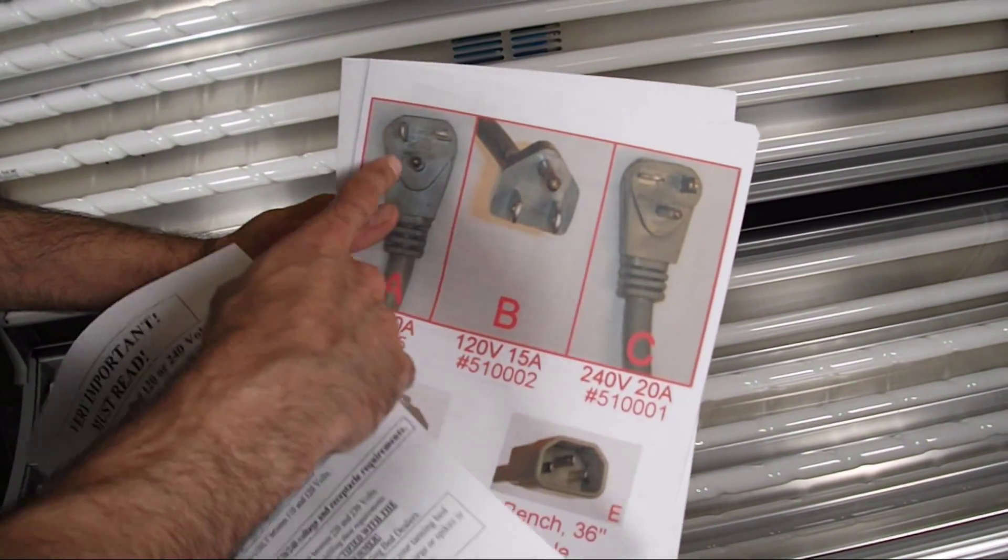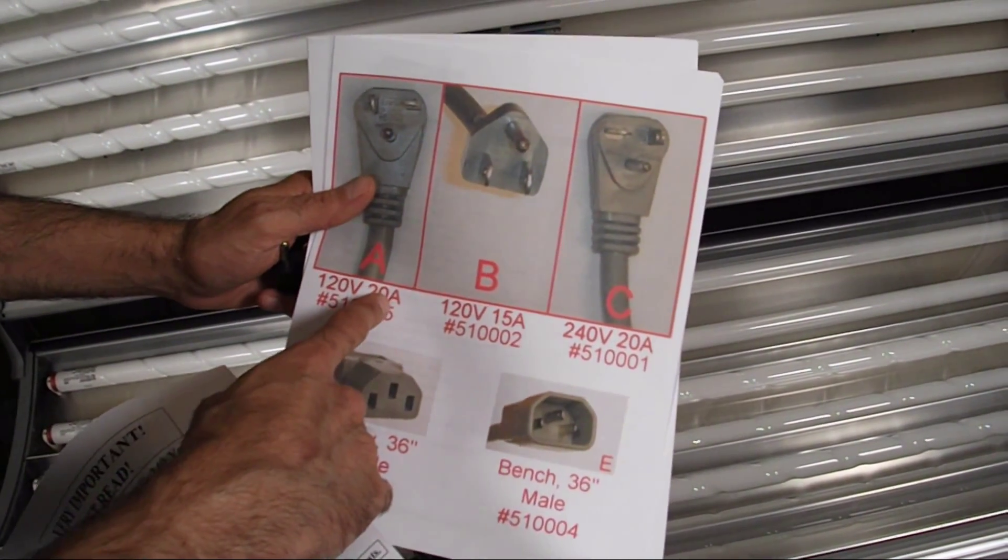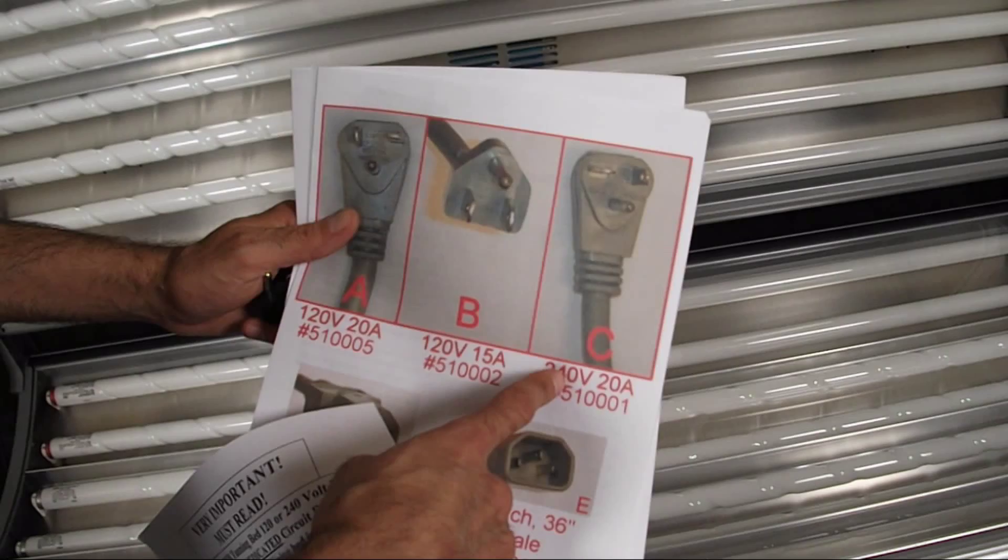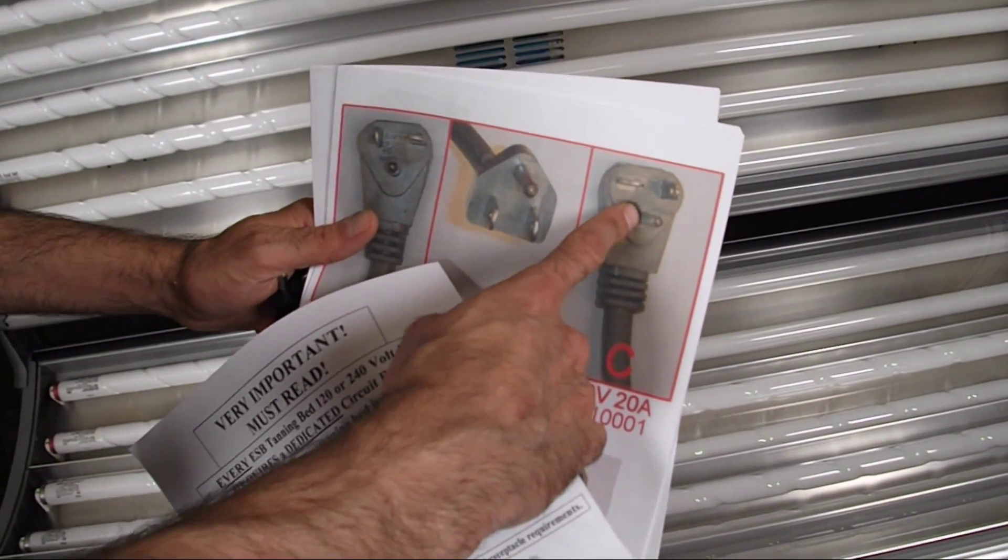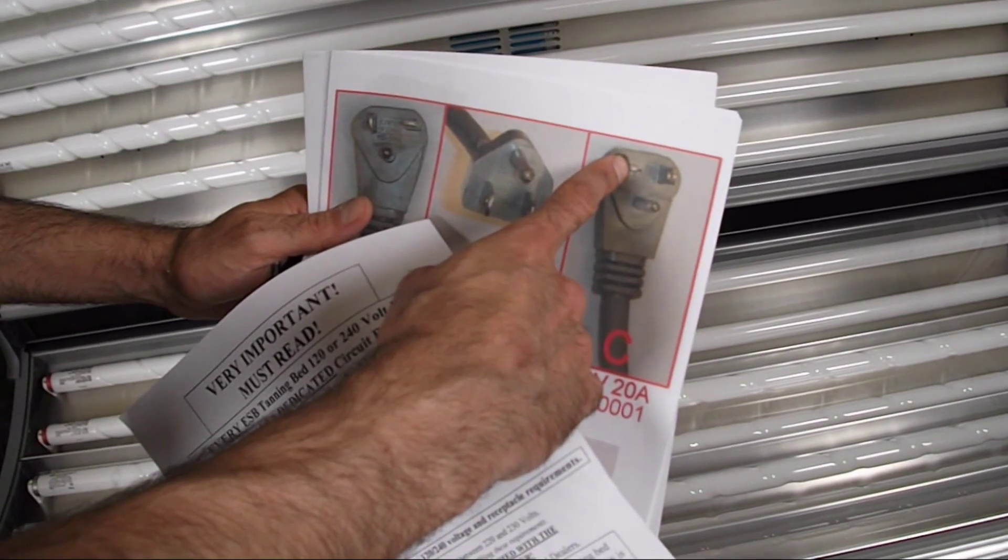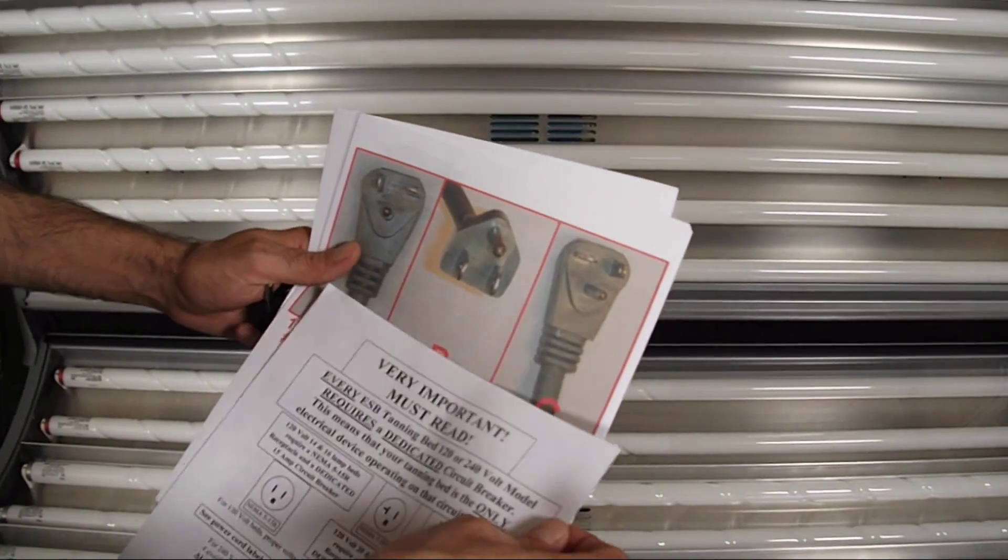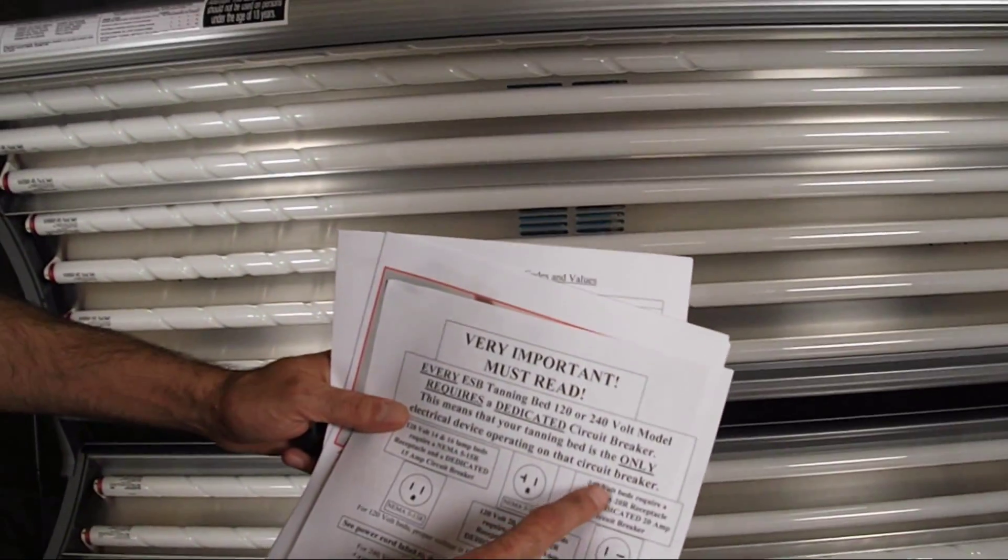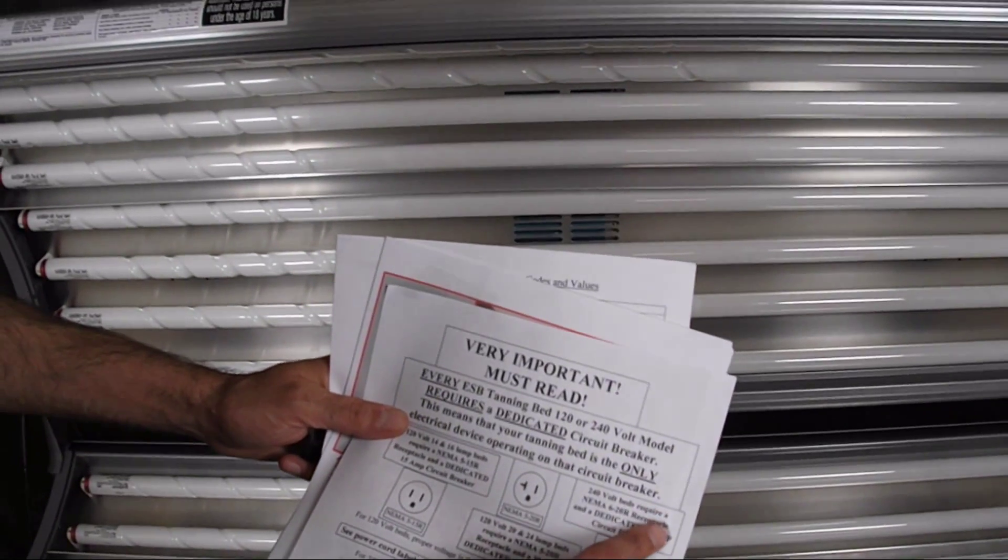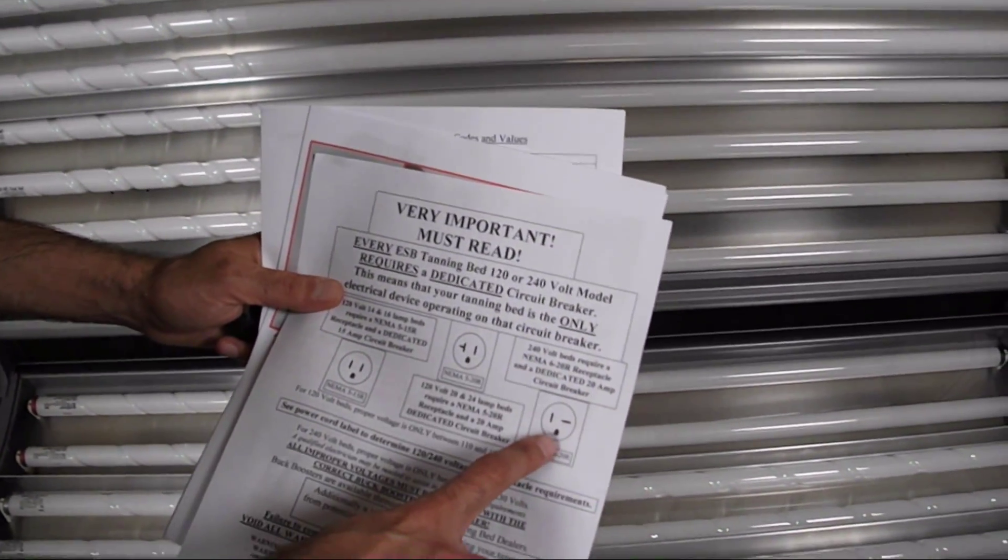This last plug here is actually a mirror image of the 120 volt, 20 amp. This is the 240 volt, 20 amp plug. It has a horizontal terminal on the left and a vertical on the right when you have the ground at the bottom and facing you. So that is for the 240 volt beds. That is the NEMA 6-20R receptacle.